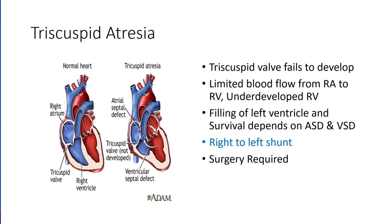Atresia as a general term means failure to develop, so if you see this anywhere in a condition that's generally what it means. This condition is exactly as it sounds — the tricuspid valve fails to develop. Without any tricuspid valve, there is no way for blood flow to move from the right atrium into the right ventricle, so you end up having a very underdeveloped right ventricle.